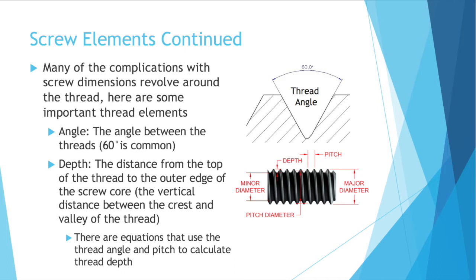Here are some important things about thread elements. Angle — that's the angle between the threads. 60 degrees is a common angle. If you see that image on the top right, the angle between each part of the thread is the thread angle. Then you have thread depth — that's the distance from the top of the thread to the outer edge of the screw core, the vertical distance between the crest and valley of the thread. So it'd be from the top of that flat area all the way down to the bottom of that valley, measured vertically. There are actually equations that use the thread angle and pitch to calculate thread depth.